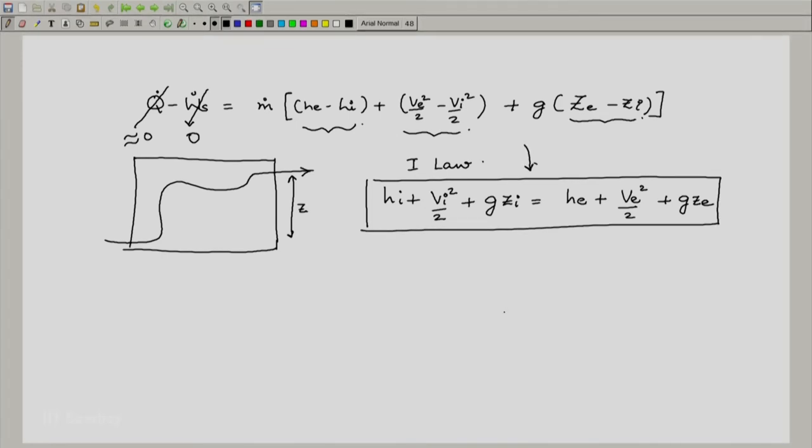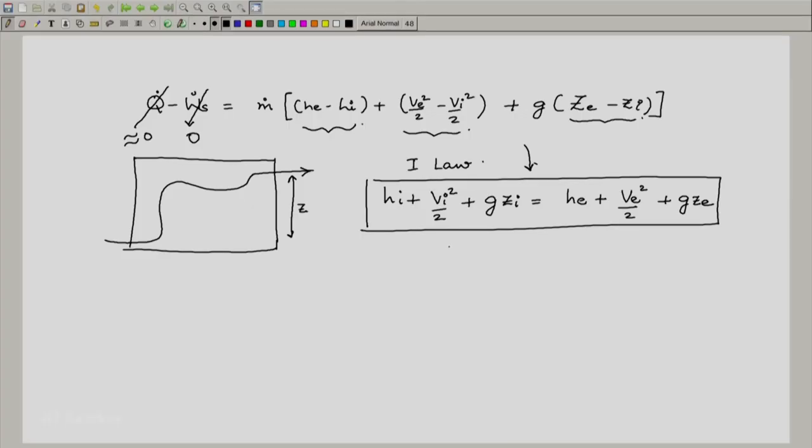Now, if we think of a situation where the temperature does not change and it is a fluid like an ideal gas, the u also does not change. And since h equals u plus pv, we say if u_i equals u_e, probably because the temperature does not change, then instead of h we can remove the u and write only pv here. And since pv can be written as p by rho, we would have an equation instead of h_i, we would write p_i by rho_i.